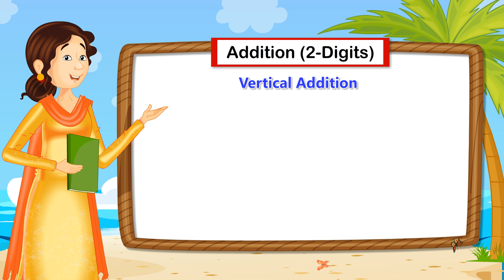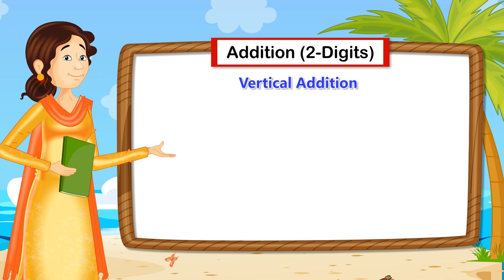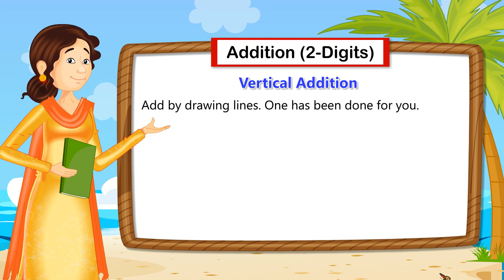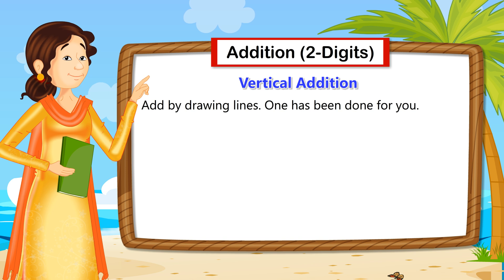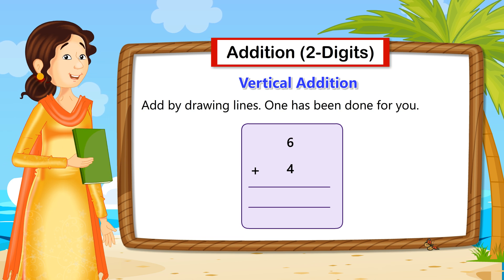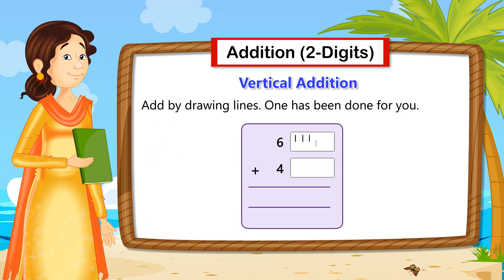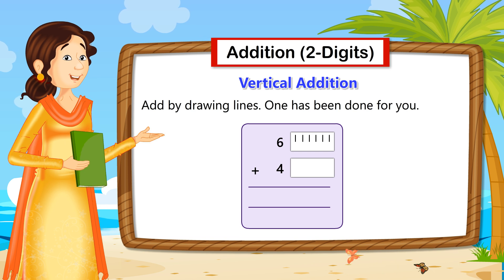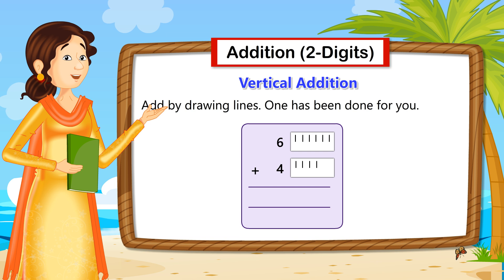Vertical addition. Let's add numbers by drawing lines. Here, the first digit is 6, so let's draw 6 lines. The second digit is 4, so let's draw 4 lines.